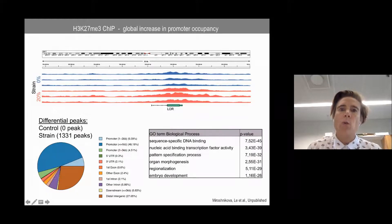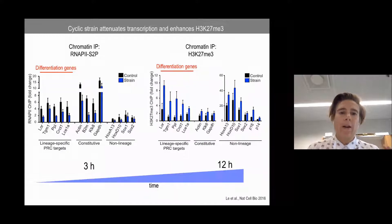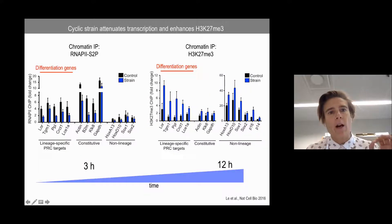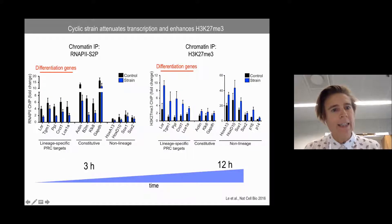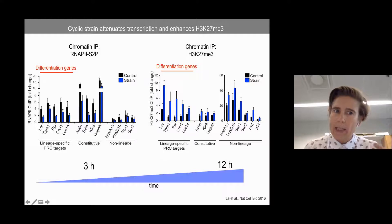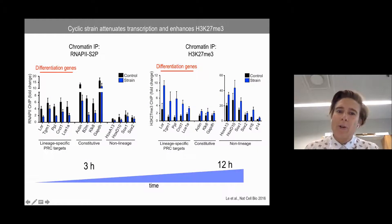The GO terms showed organ morphogenesis and developmental genes, as expected. It seemed we were increasing pre-existing silencing of polycomb repressive target genes. ChIP-qPCR showed elongating RNA Pol2 was reduced across three gene groups: lineage-specific PRC2 targets (differentiation genes), constitutive genes like actin and GAPDH (slightly reduced), and non-lineage genes such as HOX and SOX genes, which are not transcribed in these cells and have very low RNA Pol2 levels. H3K27me3 showed increased abundance in all groups, but most substantially in lineage-specific PRC2 targets.